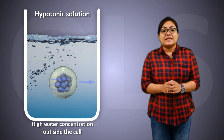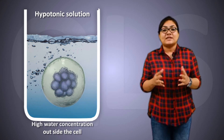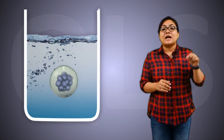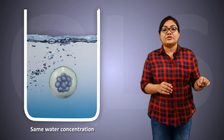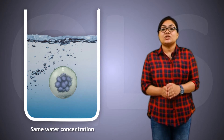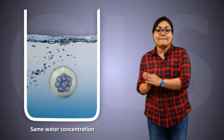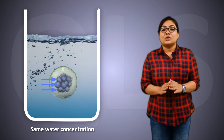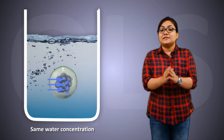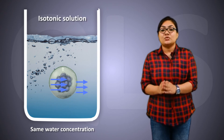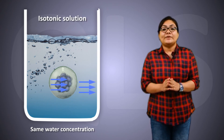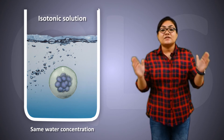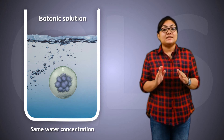In case two, we put the animal or plant cell in a medium having the same water concentration — jiska matlab hai ki water ka concentration cell ke andar aur cell ke bahar dono same hoga. There will be no net movement of water across the membrane. This type of solution is called an isotonic solution. There is equal movement of water in and out of the cell, and as a result the size of the cell remains the same — cell ka size change nahi hoga.